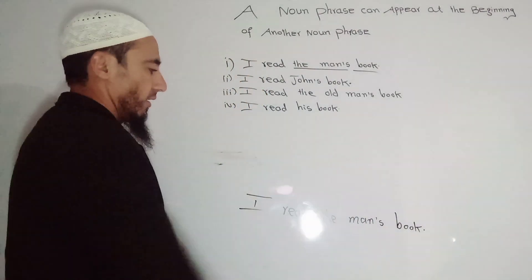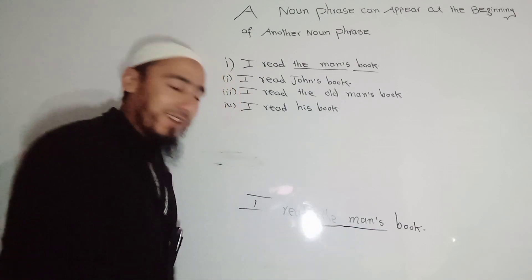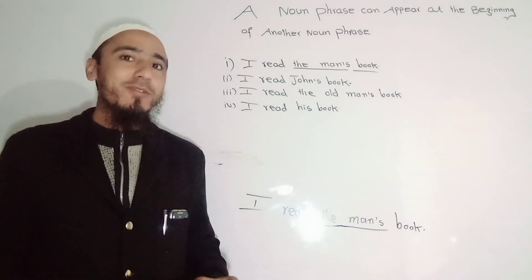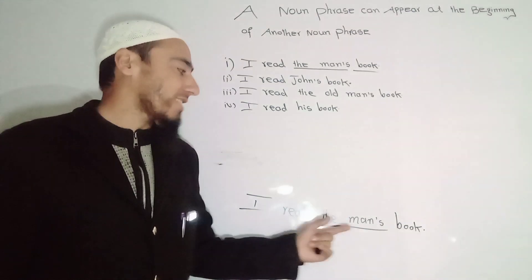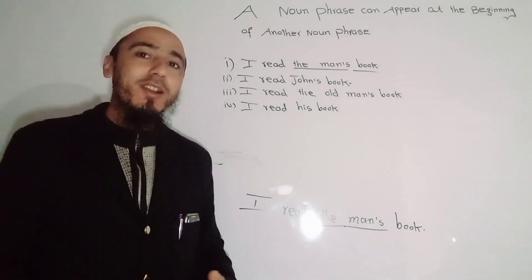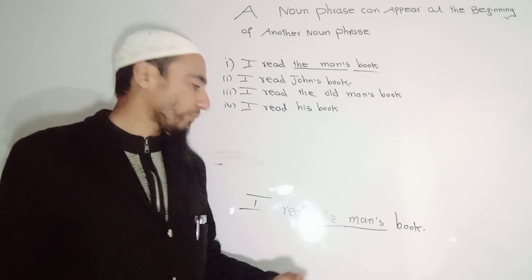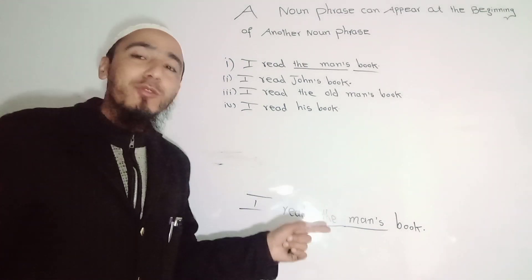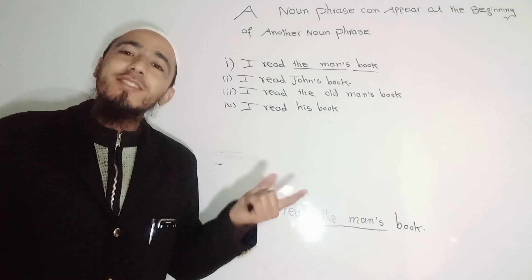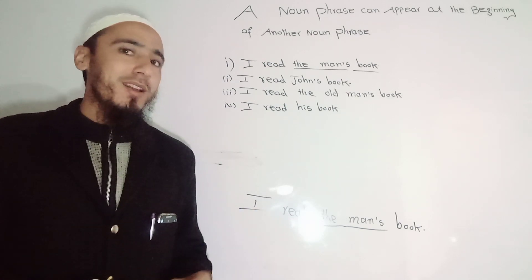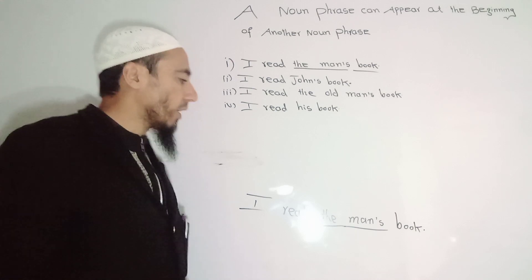Now you see, I read the man's book. Here, 'man's' - this case is also called genitive case. Why is it called genitive case? Because sometimes it expresses possession. Here it expresses possession. It means when I say the man's book, it means the book of the man. Okay, the book of the man. So this is also called genitive noun phrase or the noun phrase in genitive case. And I told you why it is called genitive noun or genitive case - because sometimes it is used to express possession, ownership, or authority.